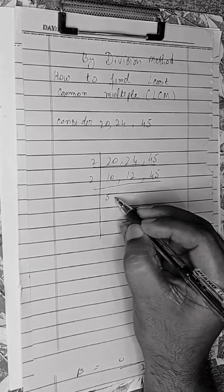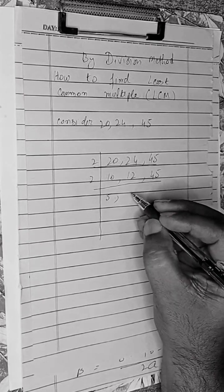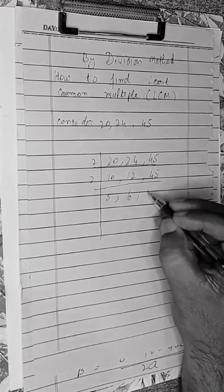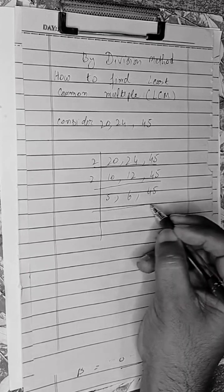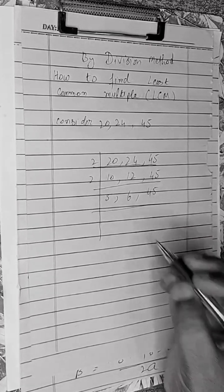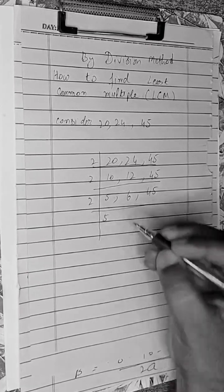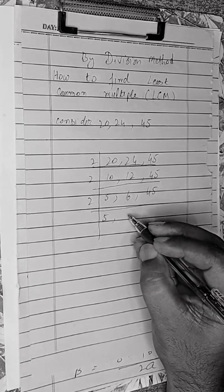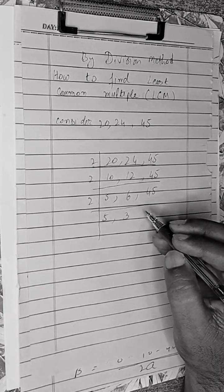Here is 5, here is 6, here is 45 remaining the same. Then once again we can divide it by 2. Now 5 will remain as it is, 6 will be divided by 2 to get 3, and 45 will remain the same.